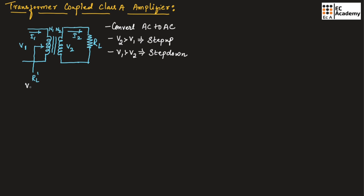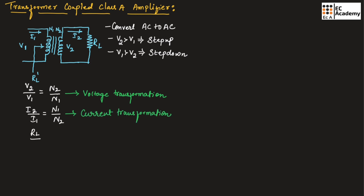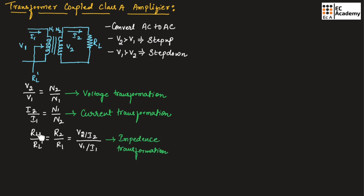The ratio V2 divided by V1 can be equated to N2 divided by N1. This is known as voltage transformation. The current ratio I2 divided by I1 can be given as N1 divided by N2. This is the current transformation. The ratio RL divided by RL dash can be given as R2 divided by R1, that is V2 divided by I2, whole divided by V1 divided by I1. This is known as impedance transformation. Here RL is the output resistance represented as R2, and RL dash is the input resistance represented as R1.